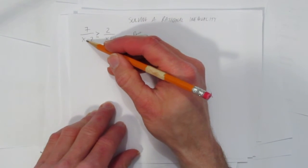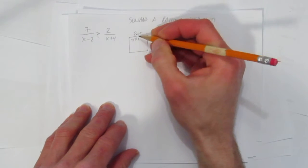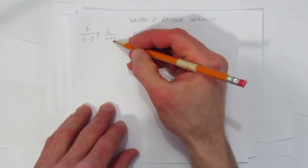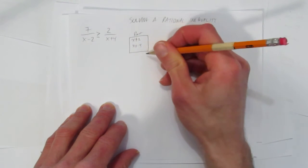So the restriction here is x can't be 2, that would make this denominator 0, that would be bad. So x can't be 2. What would make this denominator 0? Negative 4. So x can't be negative 4.